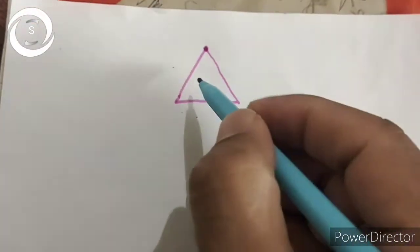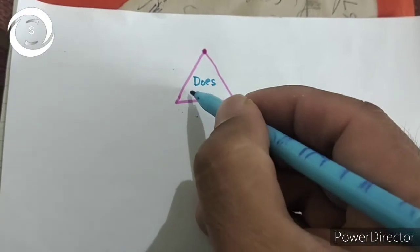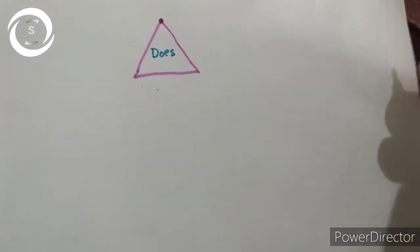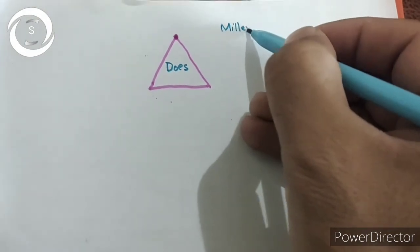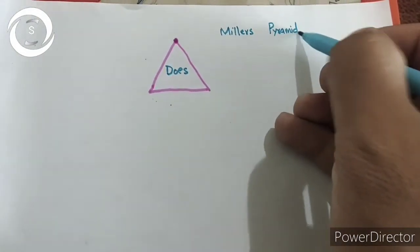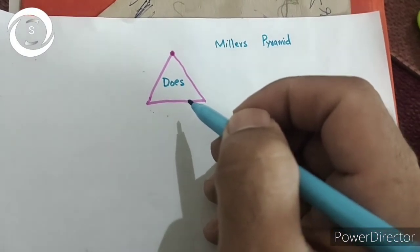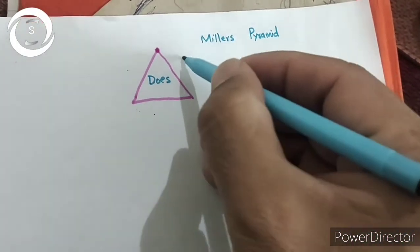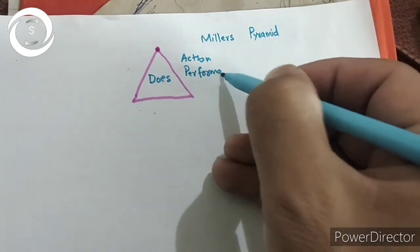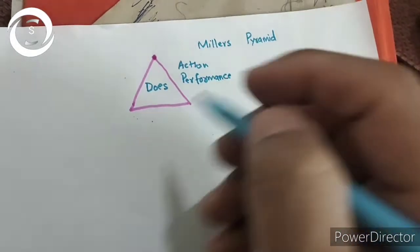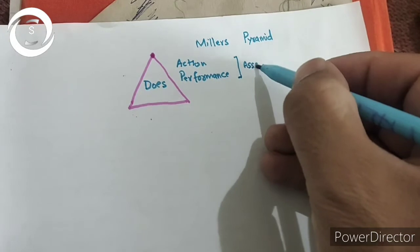In this fifth video of medical education, I will discuss the 'does' part of Miller's Pyramid, where action or performance is elicited. As we have already discussed in Miller's Pyramid previously, the learner or trainee truly performs through direct observation, when performance is integrated into practice.